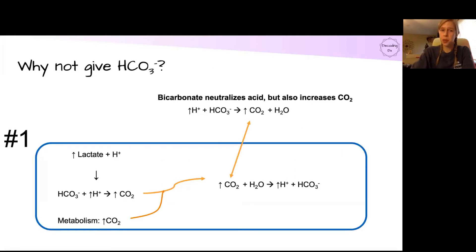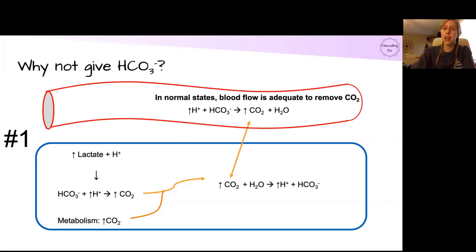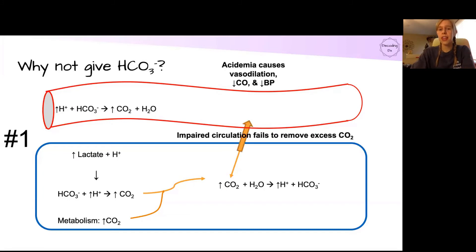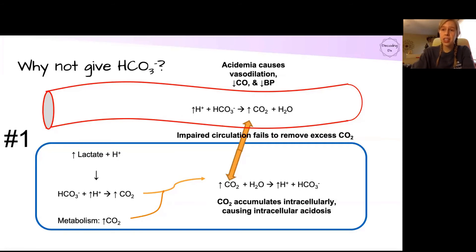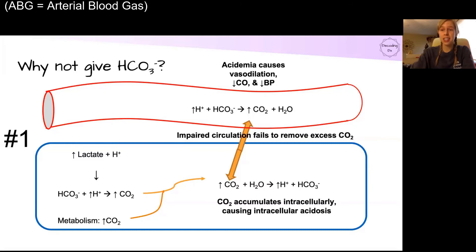If the problem is acidosis, why can't we just replace the bicarbonate and neutralize the acid? There are a lot of reasons. First, bicarbonate neutralizes acid but also increases carbon dioxide by the simple balance of the chemical equation. In a normal state, adequate blood flow removes that excess CO2. But with acidemia, the cardiovascular effects cause vasodilation and poor circulation, so excess CO2 isn't removed. It builds up, and if the diffusion gradient is off due to CO2 buildup in the arterioles, it stays in the cells and causes intracellular acidosis. So even though your ABG shows a normal pH after giving bicarbonate, inside your cells it's an acidotic state, impairing all your metabolic enzymes.